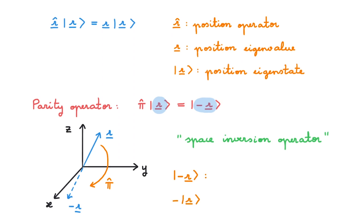With this definition, it is very important that we don't confuse the ket minus r with the negative of the ket r. The first is the eigenstate of the position operator associated with the position eigenvalue minus r. For the second, this part is the eigenstate associated with eigenvalue r, and all we're doing is multiplying the ket by the scalar minus 1. This is a subtle but essential difference to be able to confidently work with the parity operator.